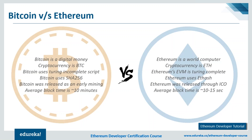Ethereum processes transactions faster than Bitcoin. The average block time in Ethereum is around 10 to 15 seconds, while in Bitcoin it is approximately 10 minutes per block. These were some basic differences in the two platforms, and there is a dedicated video comparing the two cryptocurrencies on Edureka's YouTube channel.